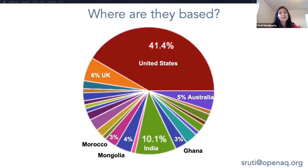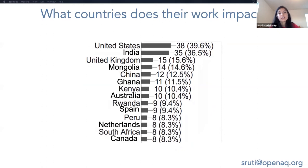So where are they based? The majority are in the United States. We know that it's skewed towards the Western world, and we'd love for more people in other parts of the world to join us. We do have a good chunk of people in India and Mongolia. In terms of what countries their work impacts, again mostly the US, but you can also see parts of Asia like Mongolia and China, and parts of Africa like Ghana, Kenya, and Rwanda, and also definitely Europe.